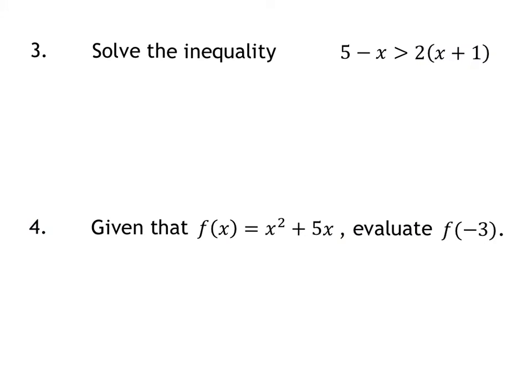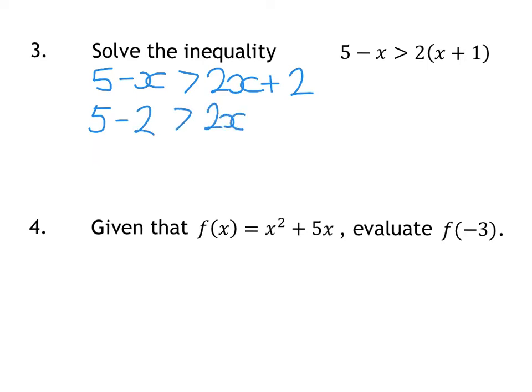Question 3 is an inequality. First we expand the bracket on the right-hand side, giving us 5 take away x is greater than 2x plus 2. You can bring all the letters to the left or take them to the right. Bringing numbers to the left: positive 2 comes over becoming 5 take away 2, and on the right 2x plus x. That leaves 3 is greater than 3x, so 1 is greater than x.